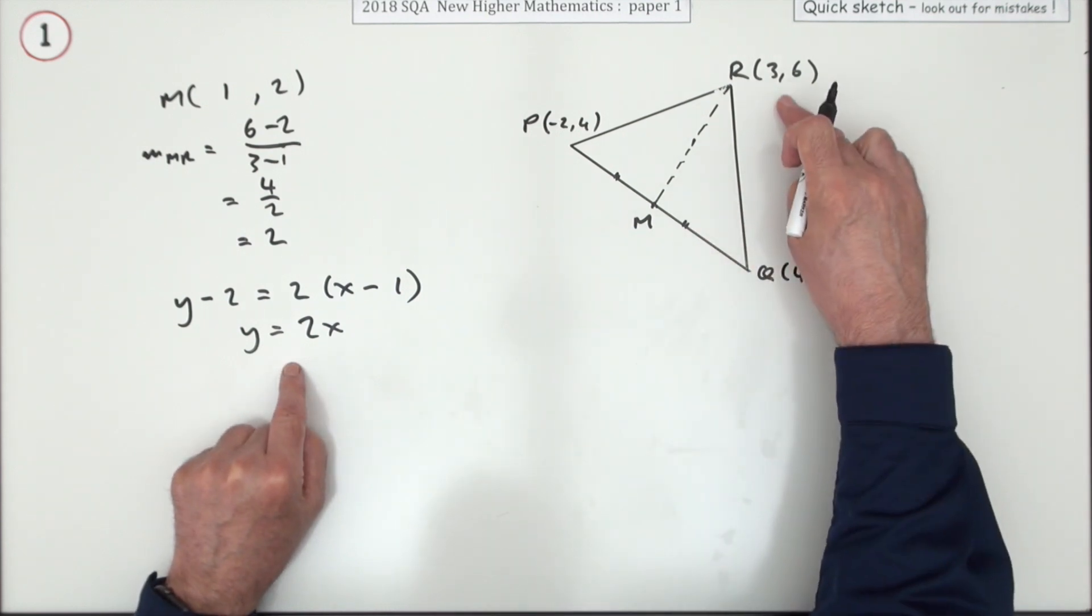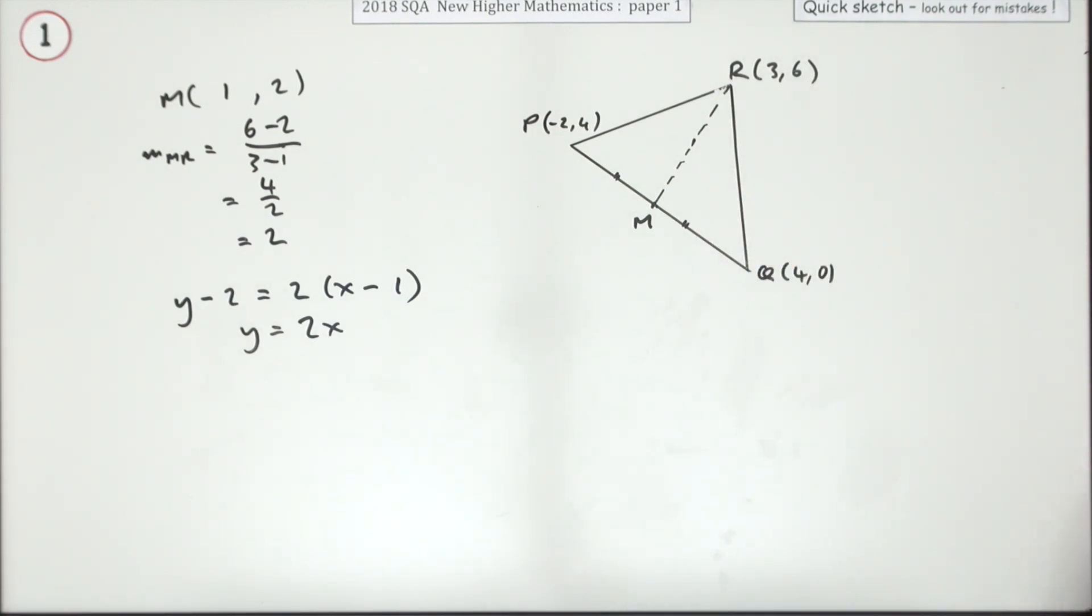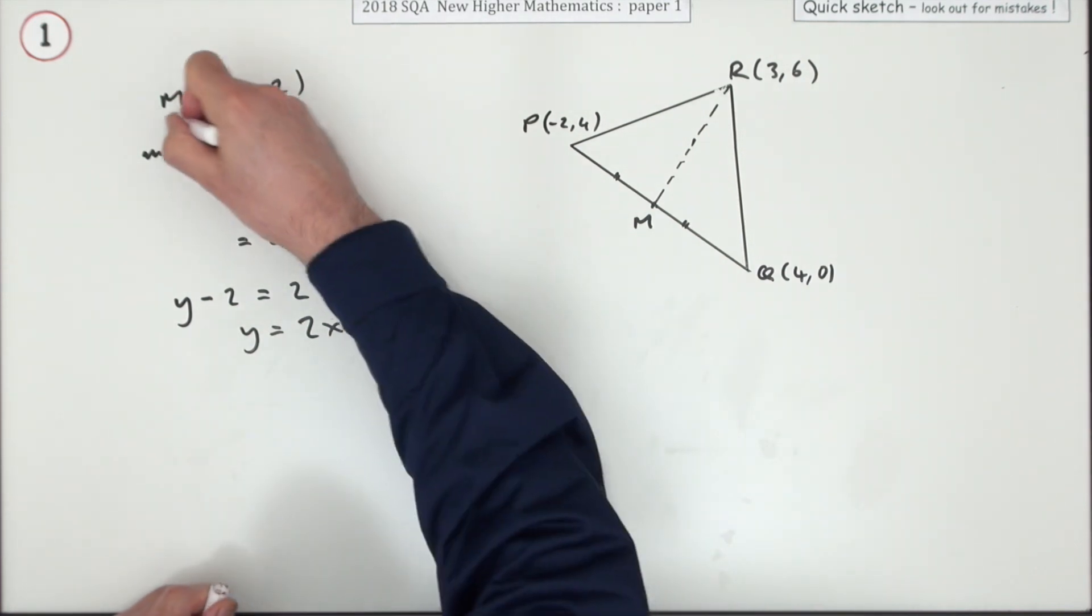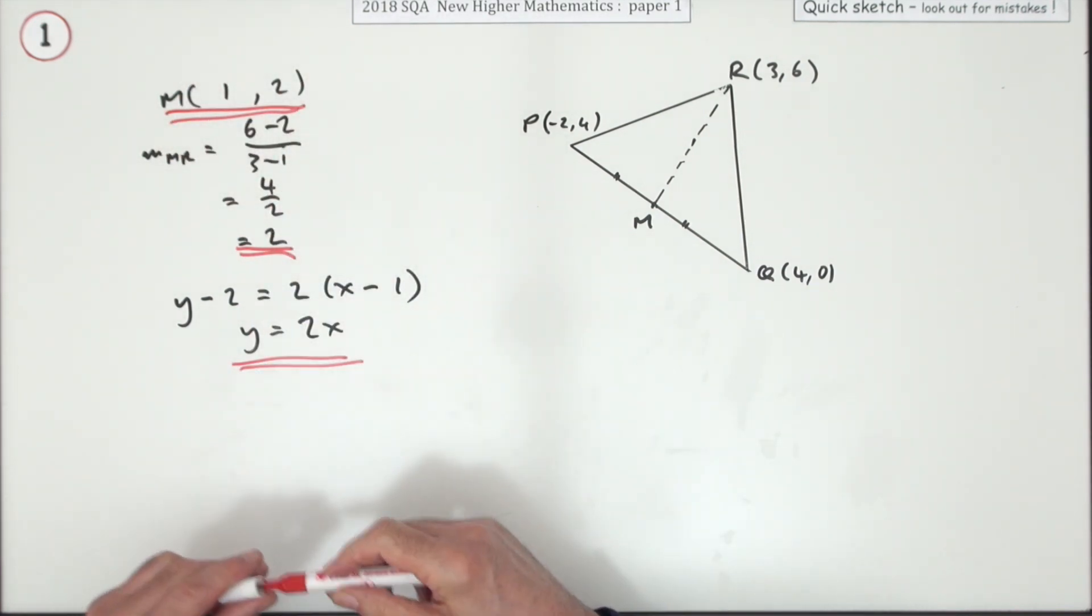If x is 3, yes, y is 6. So that should be your one, two, three marks to set you off.